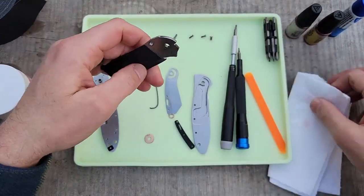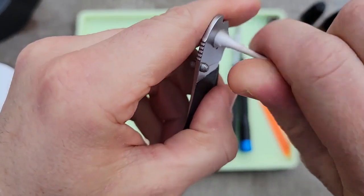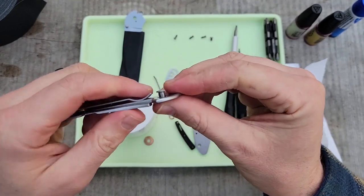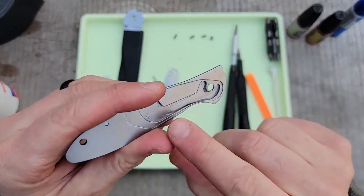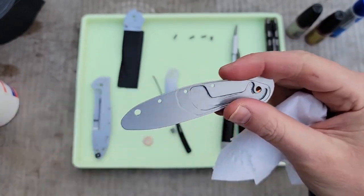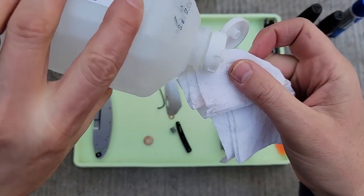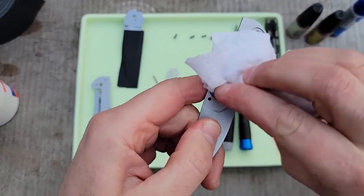At this point, we pretty much have the whole knife apart and it's time to start cleaning things out. For that central pivot hole, I find that a Q-tip works fantastic. If you do have a knife that has a pivot that you can remove, I like to remove that as well. For parts and pieces that have a little bit heavier grease or contamination that's really caked on, I find that a little drop of isopropyl alcohol on my paper towel really helps dissolve that and clean it up just a little bit faster.